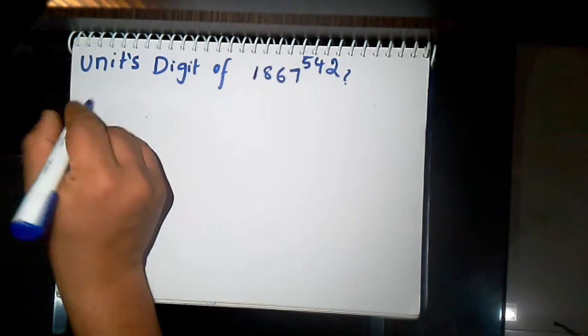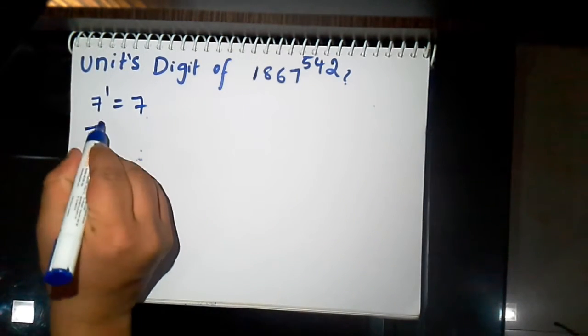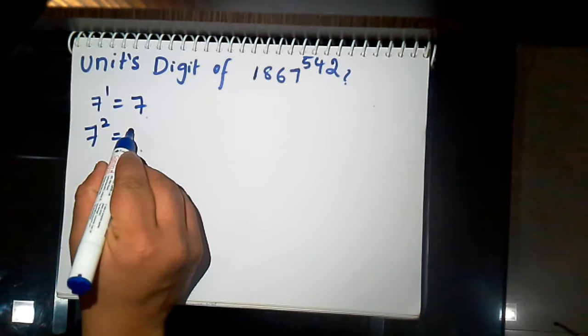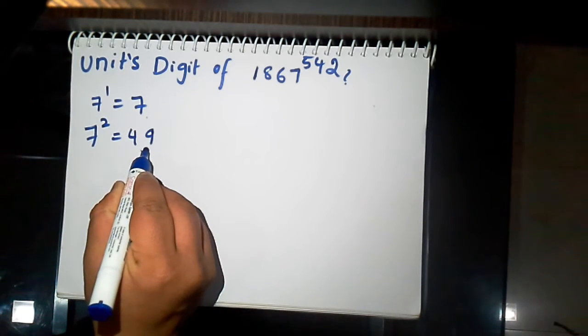Now take 7 power 1 equals 7. 7 square equals 49. The unit's value is 9. No need of previous digits.